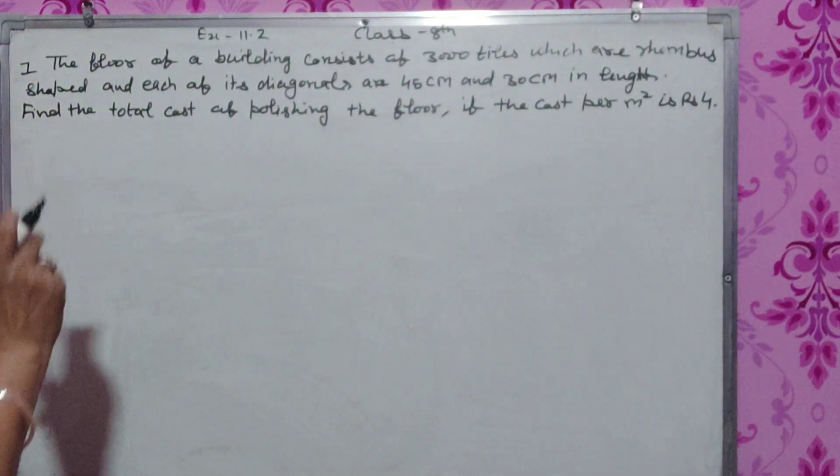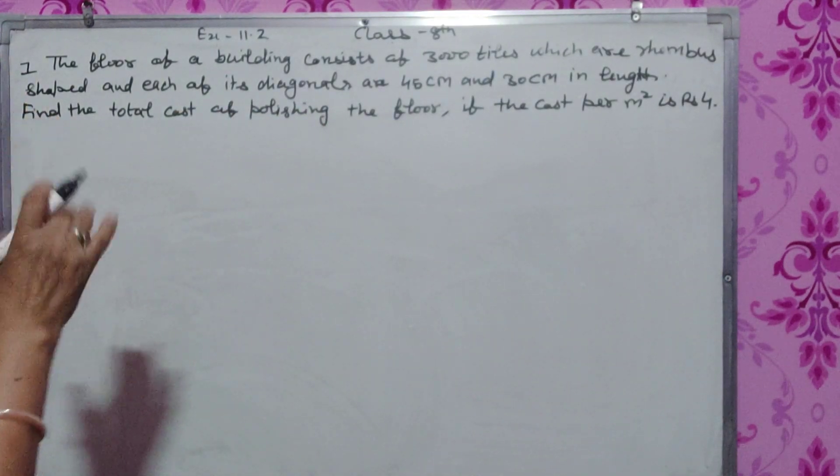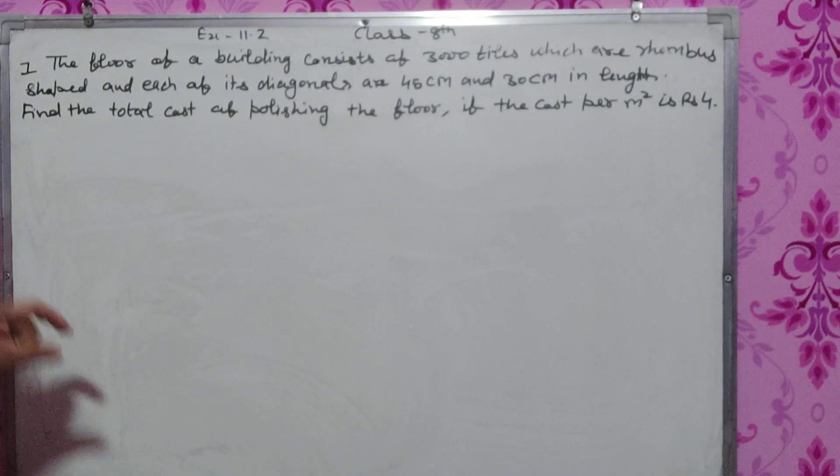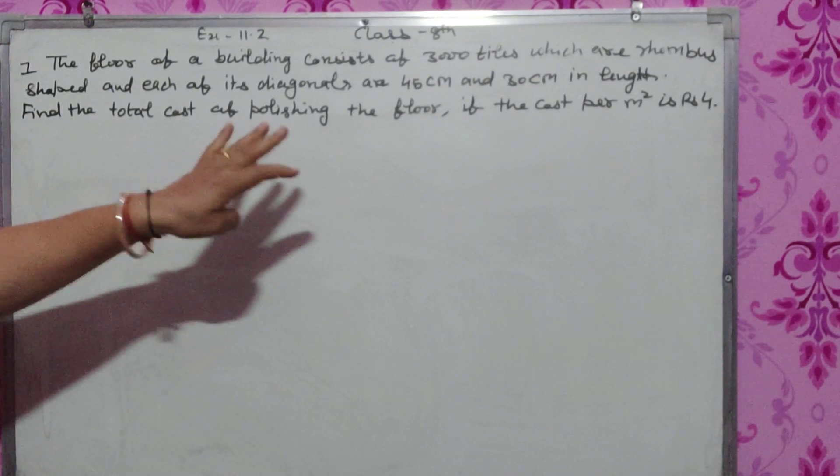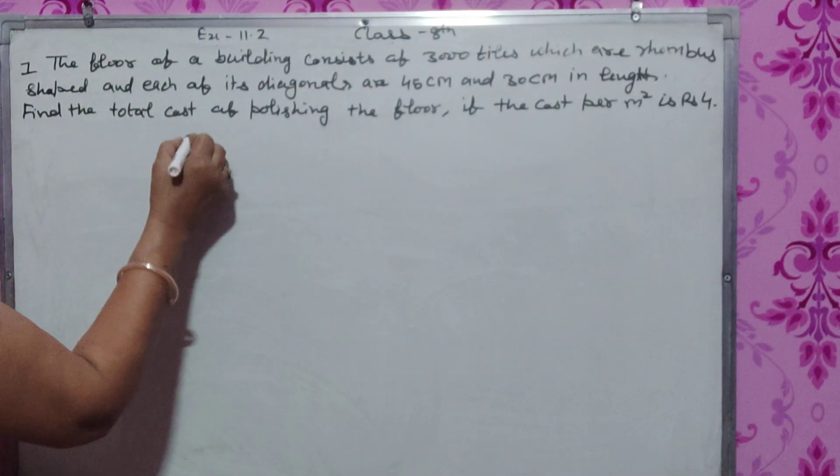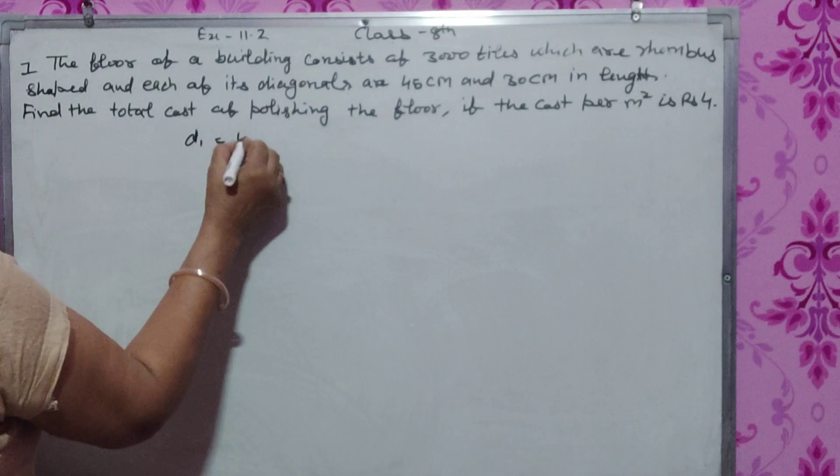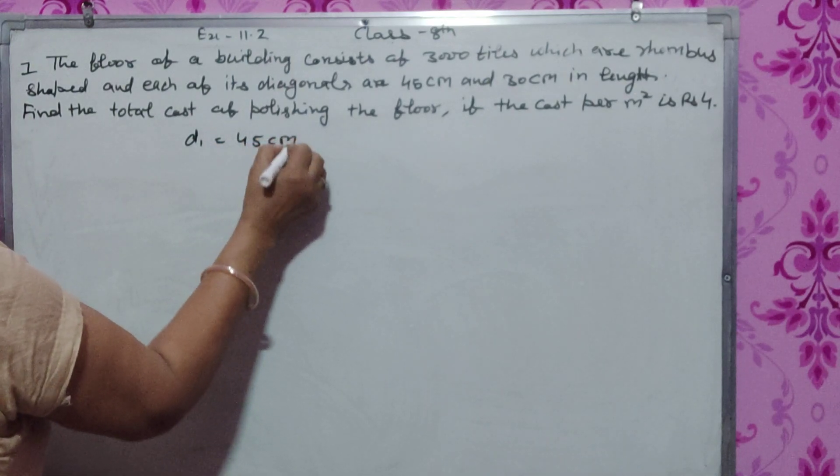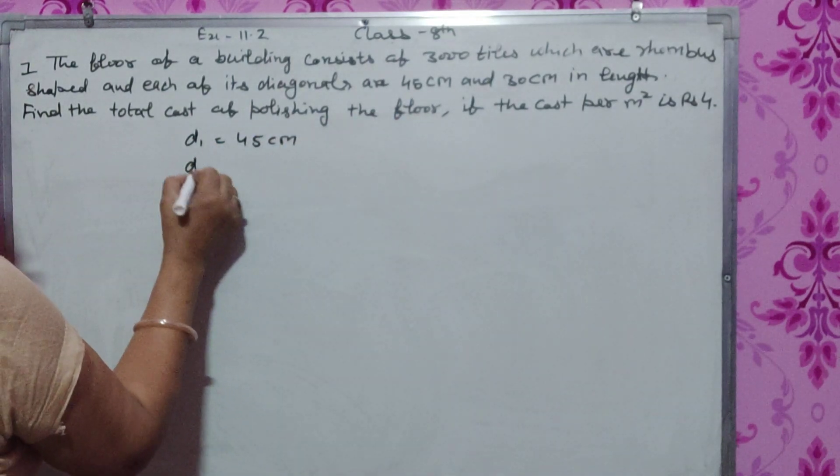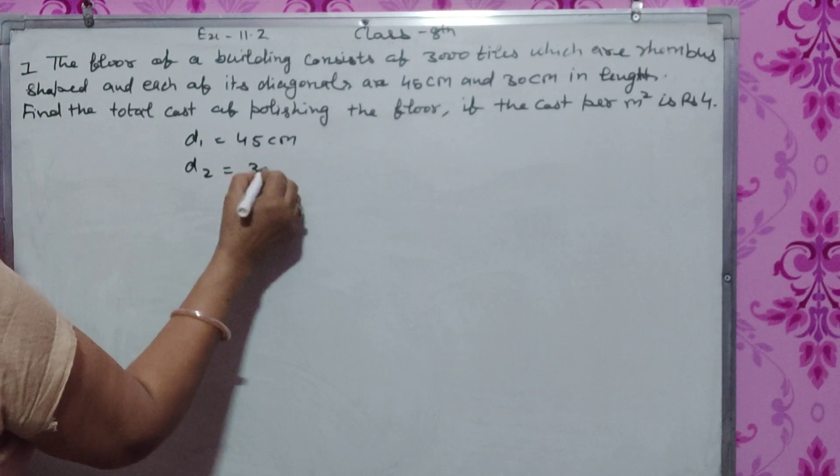We have 3000 tiles and the shape is rhombus. The diagonals are D1 is 45 cm and D2 is 30 cm.